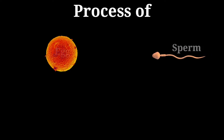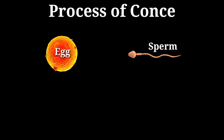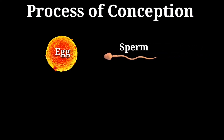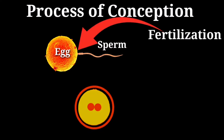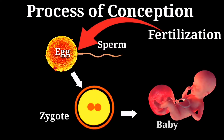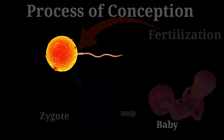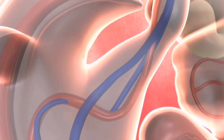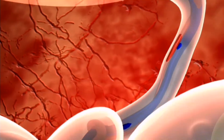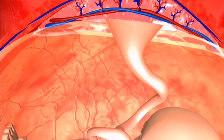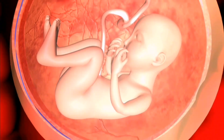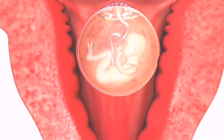Today we are going to talk about the process of conception. Conception is the moment when a sperm cell fertilizes an egg cell, resulting in the creation of a new human life. It's an incredible process that is essential for human reproduction, so let's dive in and explore the steps involved in conception.